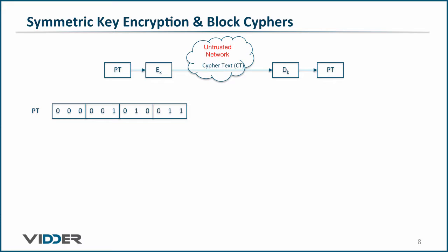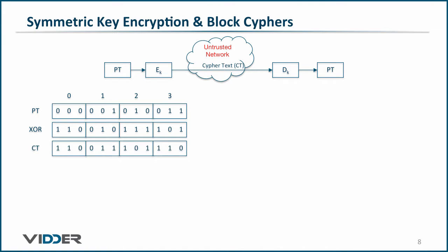Translating the binary to decimal, we see that our plain text represents the numbers 0, 1, 2, and 3. A common way to encrypt data is to exclusive OR the plain text with a pseudo-random string to generate our ciphertext, because the algorithm is reversible, as we will see soon.